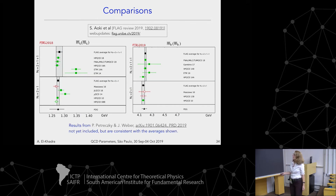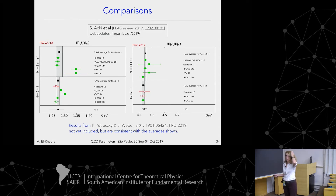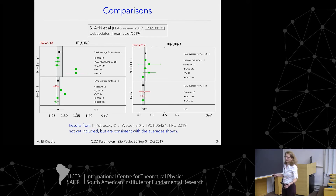Similar comparison plots exist for the charm and b quark. Results that appeared in January didn't make it into the FLAG averages due to deadlines, but they will certainly be in the next iteration, and they are completely consistent with other high-precision results. Also shown is a comparison plot for the mass ratio — it's unclear why there aren't more ratios in the FLAG review.